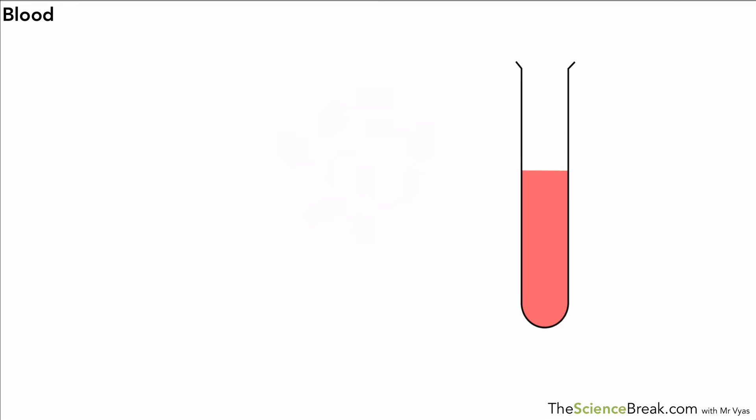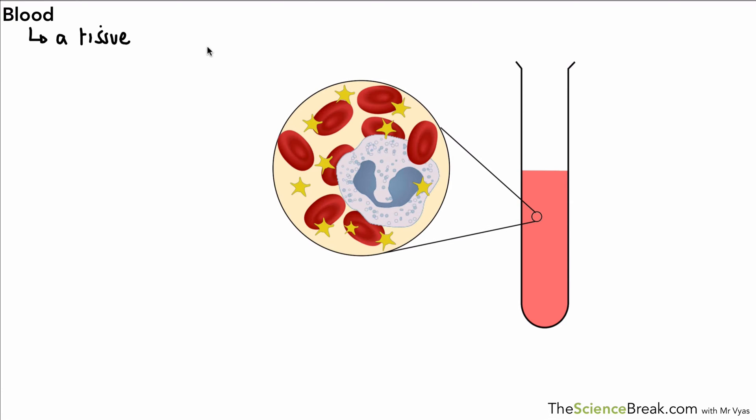Hello, today we're going to talk about blood, the different components that there are in the blood and what their jobs are. First thing to remember is that blood is actually a tissue. A tissue, as you may remember from our video, is a group of cells working together, so blood classifies or can be counted as a tissue.